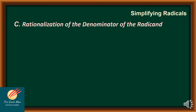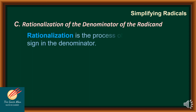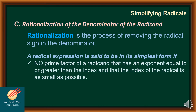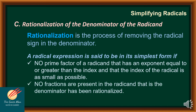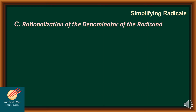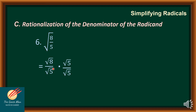The third technique in simplifying radicals is rationalization of the denominator of the radicand — the process of removing the radical sign in the denominator. A radical expression is in simplest form if no prime factor of the radicand has an exponent equal to or greater than the index, the index is as small as possible, no fractions are present in the radicand, and no denominator contains a radical sign. Consider the example: the square root of 8 over 5. We express this as square root of 8 all over square root of 5, then multiply both numerator and denominator by square root of 5 — this is the process of rationalization.